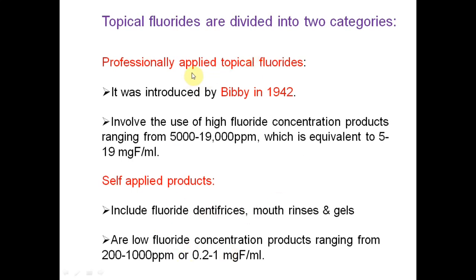For self-application, we commonly use dentifrices — most toothpastes contain fluoride — and we can also use mouth rinses and gels. These contain 200–2,000 ppm fluoride, which is less than professional application but still very high compared to systemic concentration.